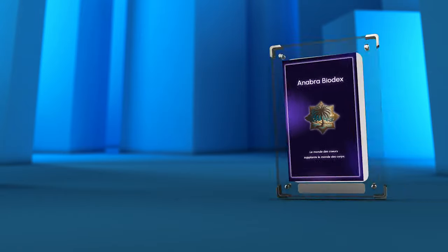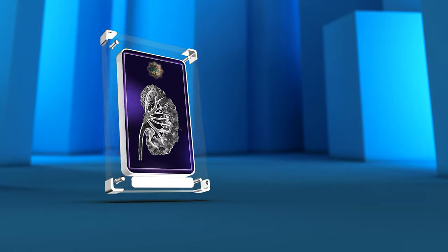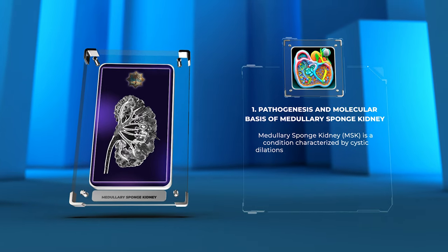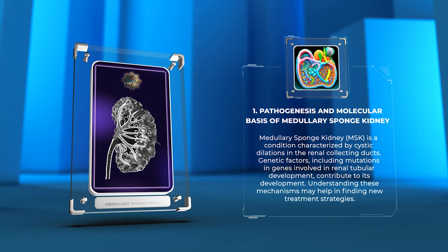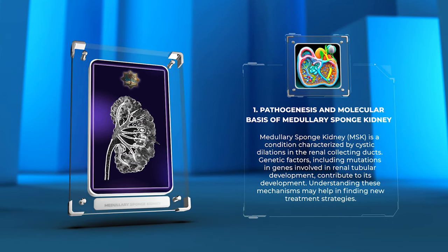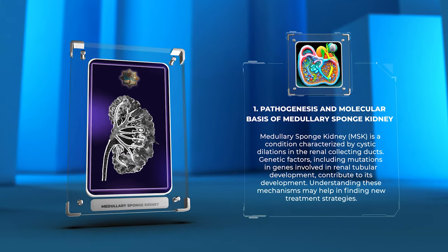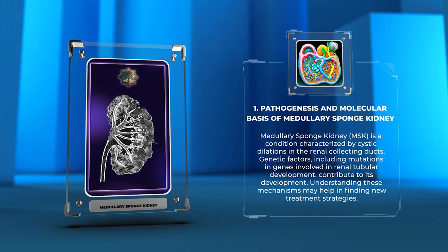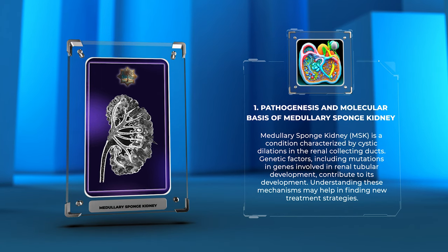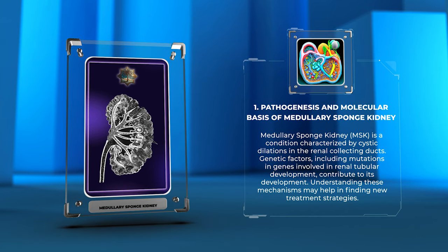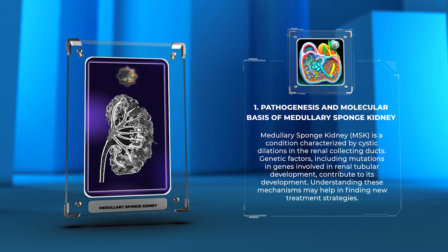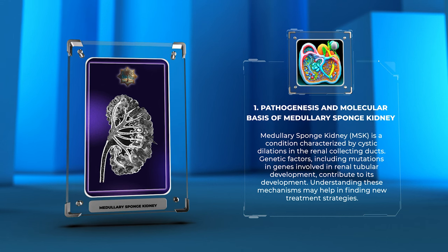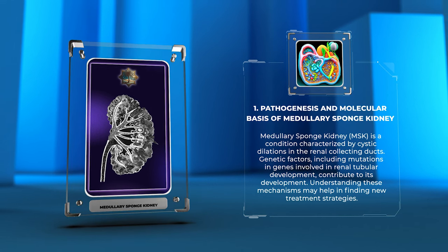Medullary sponge kidney, MSK, is a condition characterized by cystic dilations in the renal collecting ducts. Genetic factors, including mutations in genes involved in renal tubular development, contribute to its development. Understanding these mechanisms may help in finding new treatment strategies.